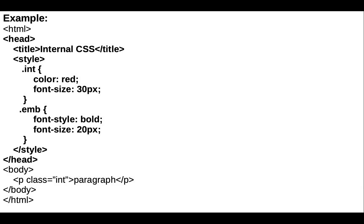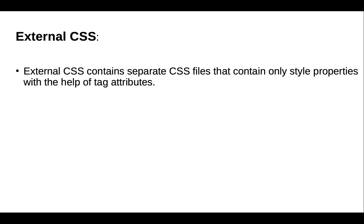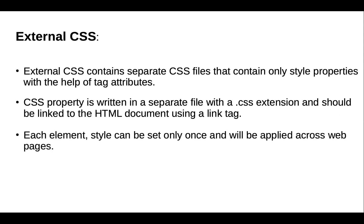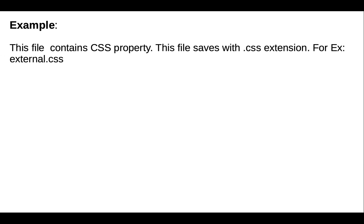Next is external CSS. External CSS contains a separate CSS file that contains only style properties. With the help of tag attributes, the CSS property is written in a separate file. That file is saved with the .css extension. First we make one CSS file and save it with the .css extension.